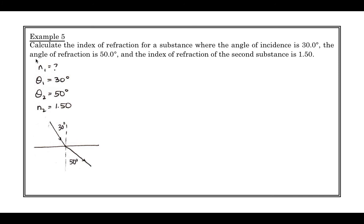We should be getting an n value that's less than 1.5, because you'll notice this is bending away from the normal. And so when we do this, we rearrange and we can solve, we sub in our numbers, we get n1 is equal to 2.3.